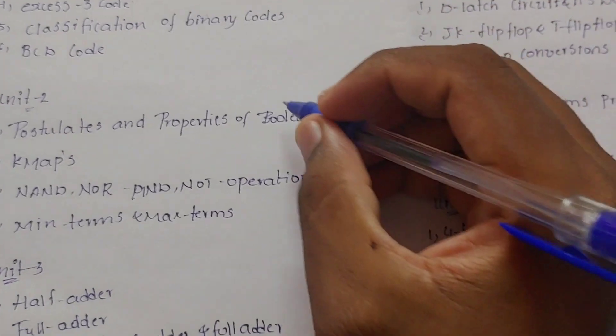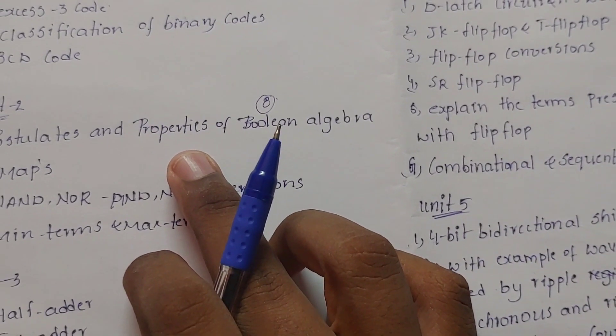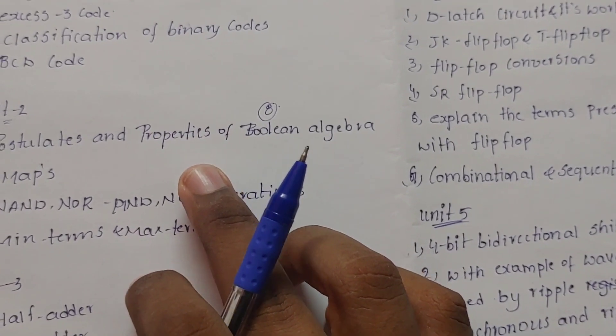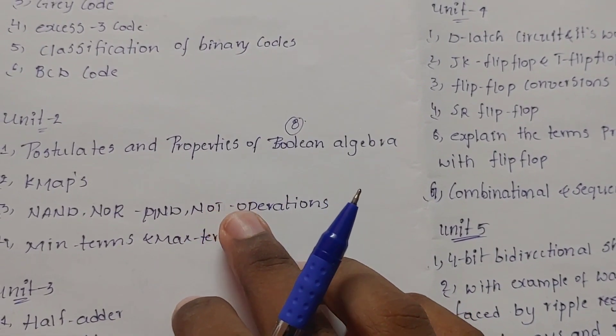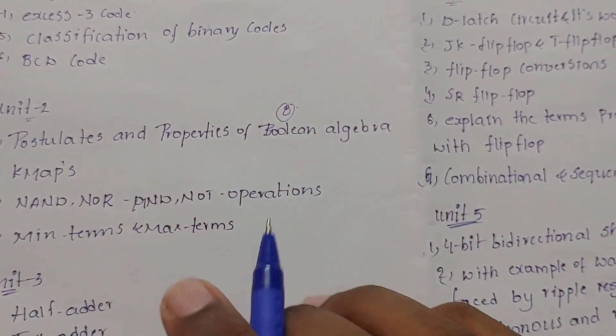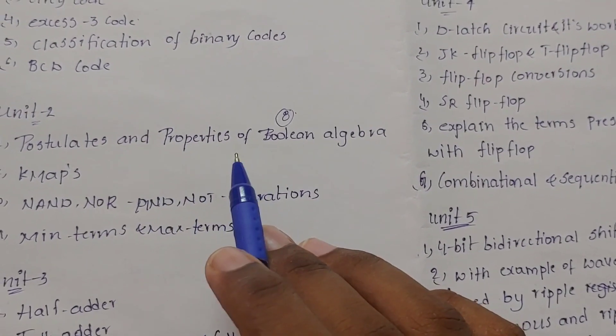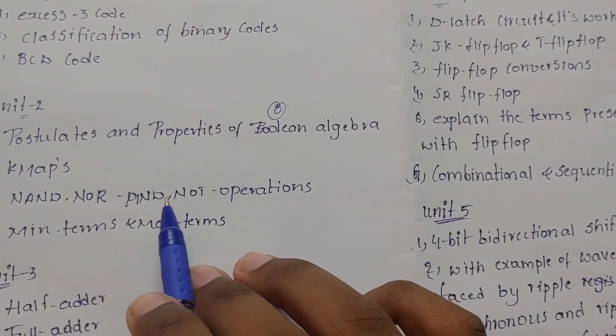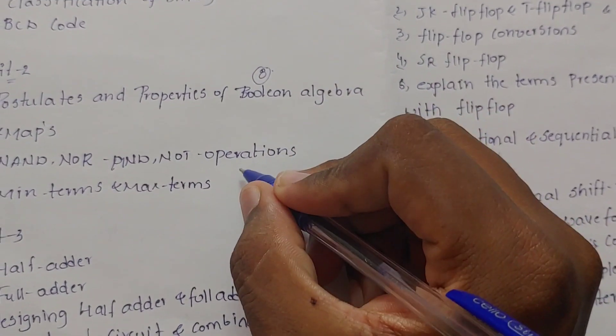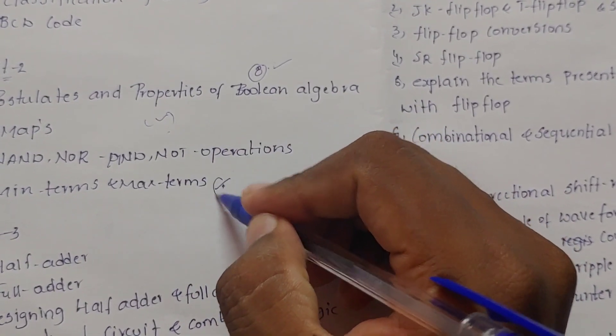Postulates and properties of Boolean algebra. In this case, we have 8 marks. Then we have K-maps - 3 variables and 4 variables K-maps. K-maps are very easy. Mark switching is very easy. Then we have to use these operations for logic diagrams. You have to construct diagrams using 5 gates. That is the min terms and max terms.